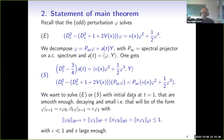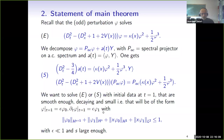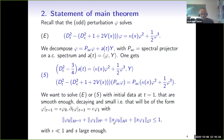We assume that the initial data are smooth enough, small enough, and have some decay. At initial time t equals one, phi equals epsilon phi_0 and DT phi equals epsilon phi_1, where epsilon is a small number. We assume phi_0, phi_1 are smooth enough, belonging respectively to H^{s+1} and H^s for some s large enough, and bounded in these spaces. Moreover, we assume decay, imposing that x phi_0 is in H^1 and x phi_1 is in H^2.